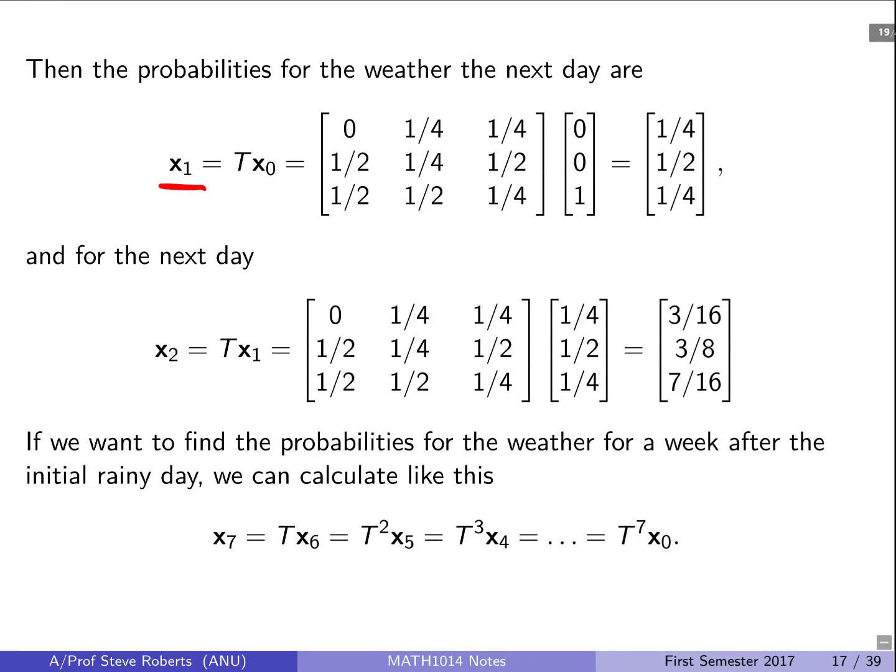So the probability, the state vector after one day is just going to be T times x0. So we multiply out the transition matrix with the state vector and we get a probability of one quarter being sunny, one half being cloudy and one quarter being raining.